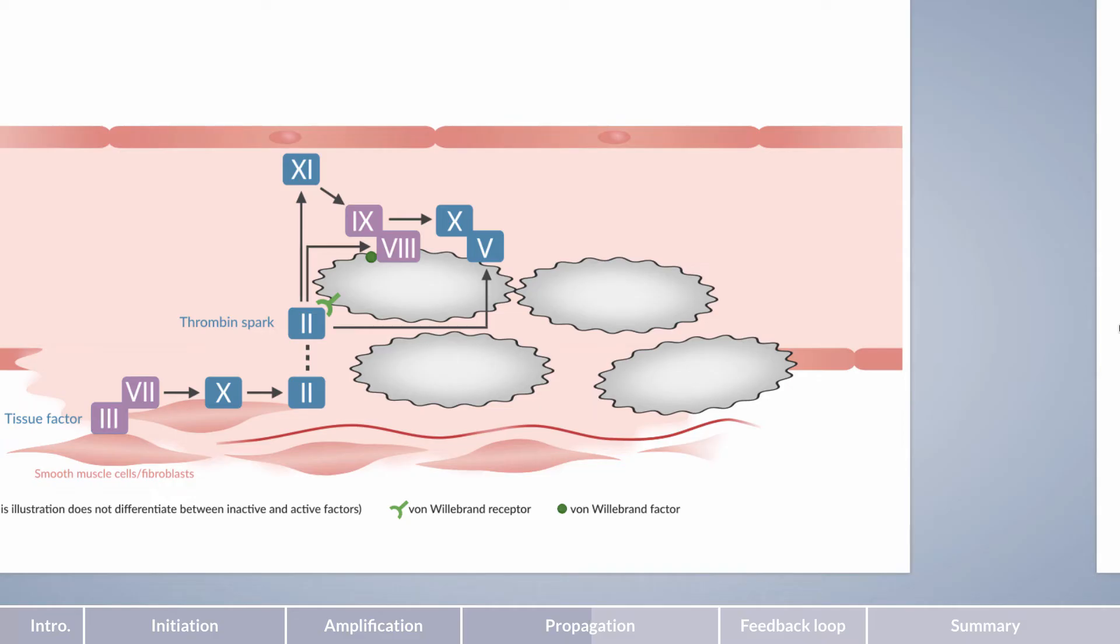Factor X then binds to activated factor V. By the way, factor V has been transported to the site by platelets, is released upon their activation, and functions as a cofactor for the conversion of prothrombin to thrombin. The binding of factor V to factor X results in increased factor X activity by 250 to 1,000 fold. This shows the importance of initial activation of factors such as factor V by the thrombin spark, which helps to get coagulation going.